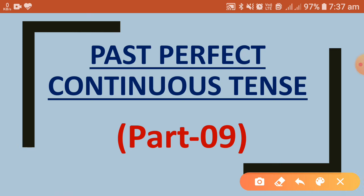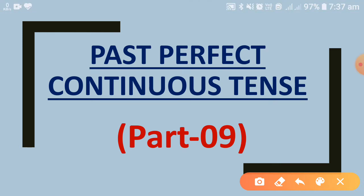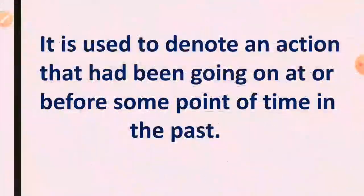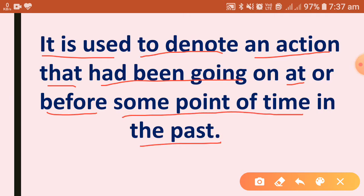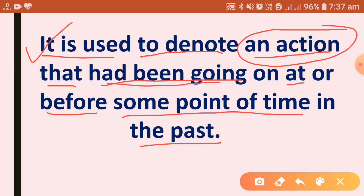Good morning everyone. This is Karan Singh and today in this video we will see a topic of English grammar: past perfect continuous tense. So let us see where past perfect continuous tense is used. It is used to denote an action that had been going on at or before some point of time in the past.